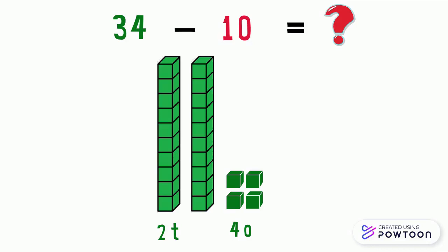And of course, we didn't change the ones digit. It stays the same, so 34 minus 10 equals 24.